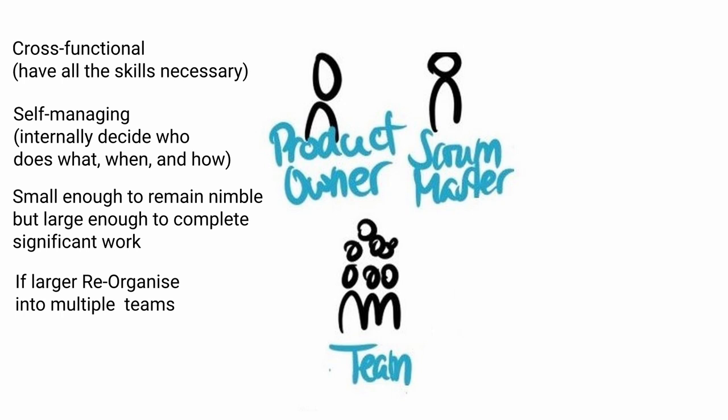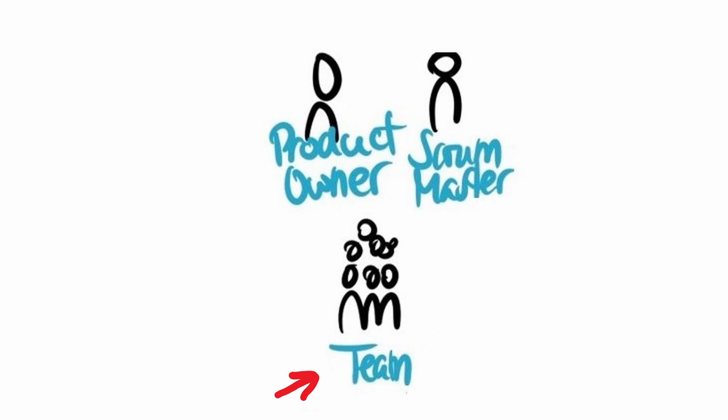Team members are the people in the team who do the actual work, whatever that work happens to be across whatever domain the team is working in. Team members are always accountable for creating a plan for the sprint — the sprint backlog — instilling quality by adhering to a definition of done, adapting the plan daily towards the sprint goal, and holding each other accountable as professionals.